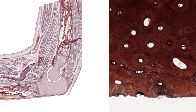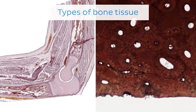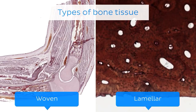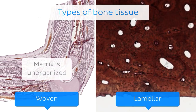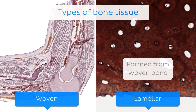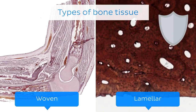There are two main classifications of bone tissue: woven bone and lamellar bone. Woven bone is a relatively weak type of bone tissue which is still developing, and its matrix is unorganised. This is the type of tissue seen in foetal bones or in bones which have been recently fractured. Lamellar bone, on the other hand, is the mature type of bone tissue which you find in all developed bones. It is formed from woven bone which has been remodelled to increase its mechanical strength.